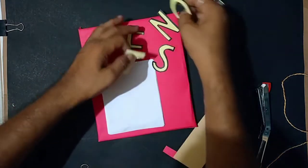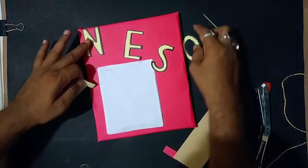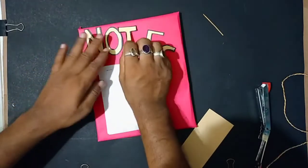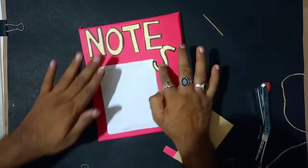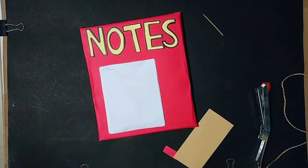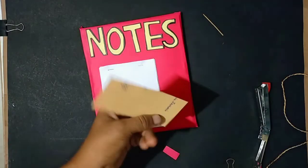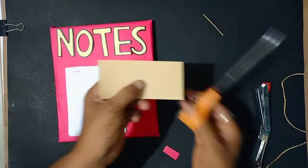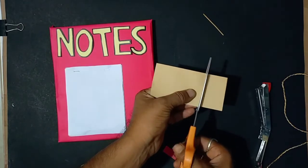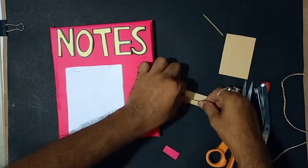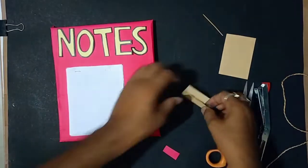With the help of a small piece of yellow paper, I have written 'notes' on it. And with the help of a scissor, I have taken off the letters. And I will arrange the alphabets onto the top of this notepad.